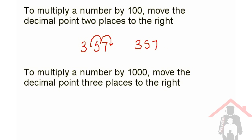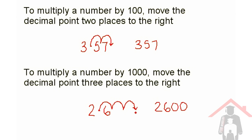When we multiply a number by 1,000, we move the point three places to the right. So for example, 2.6 times 1,000 — move it once, twice, three times. There's nothing here and here, so they need to be zeros, so it's 2,600, and the decimal point is at the end, so it can be left off.